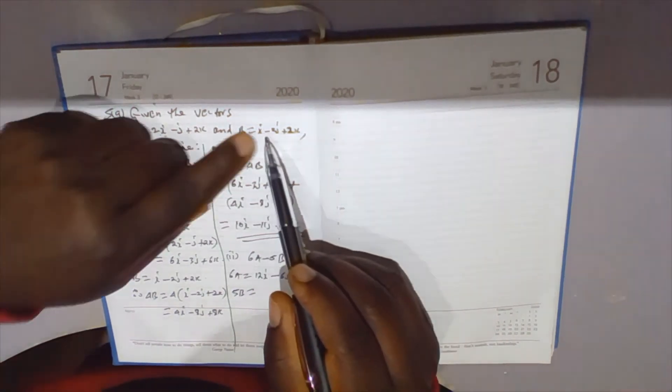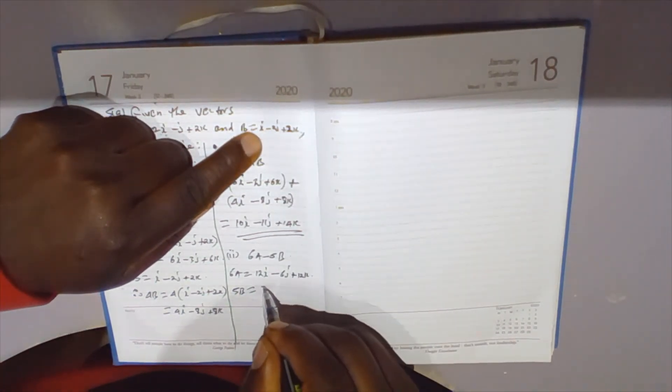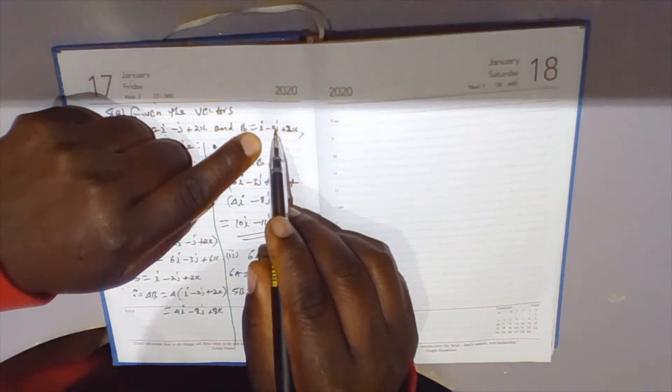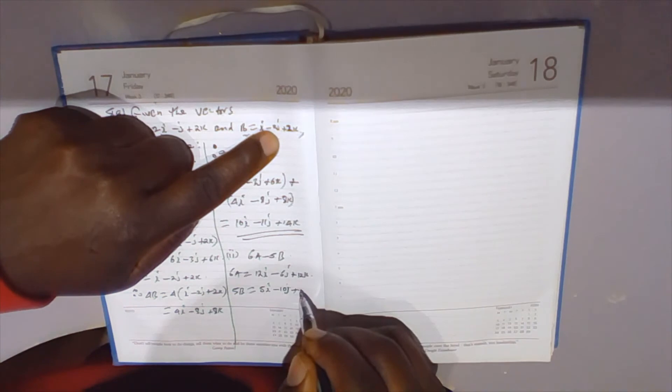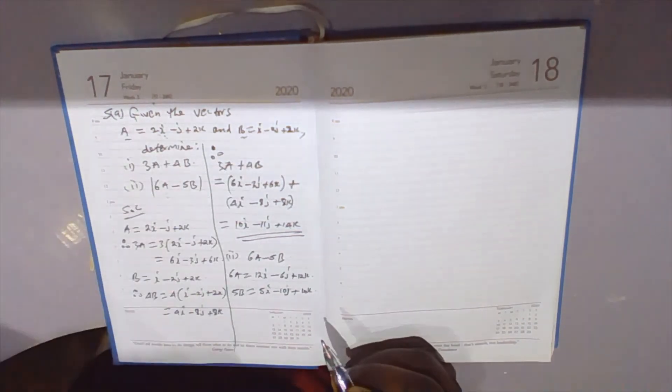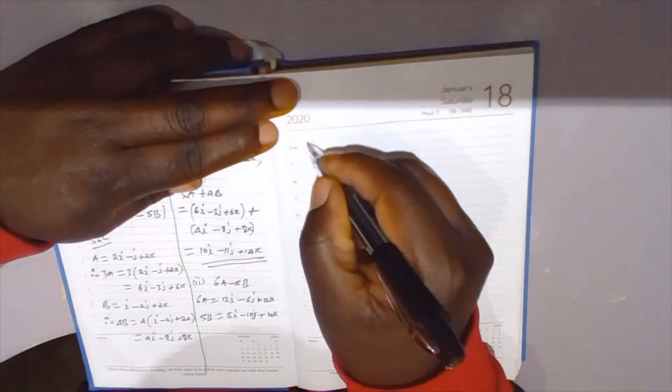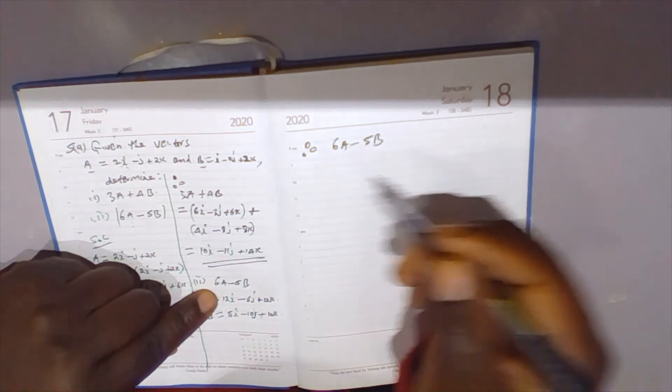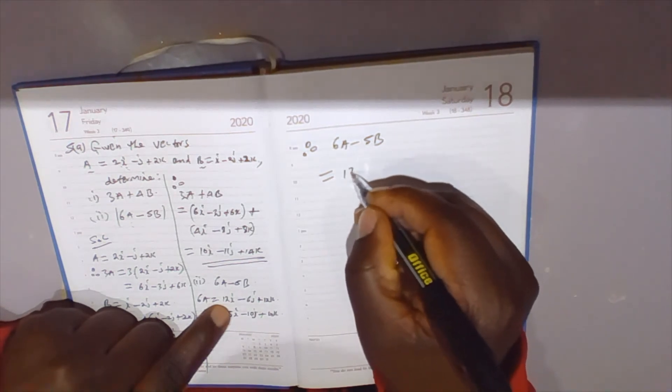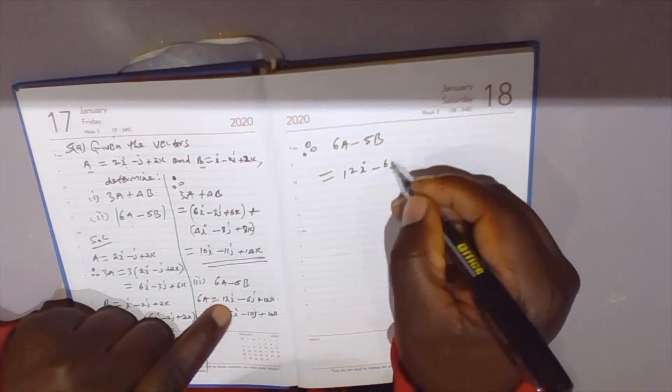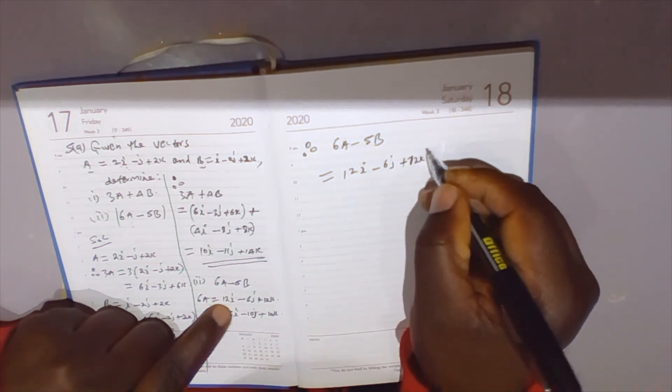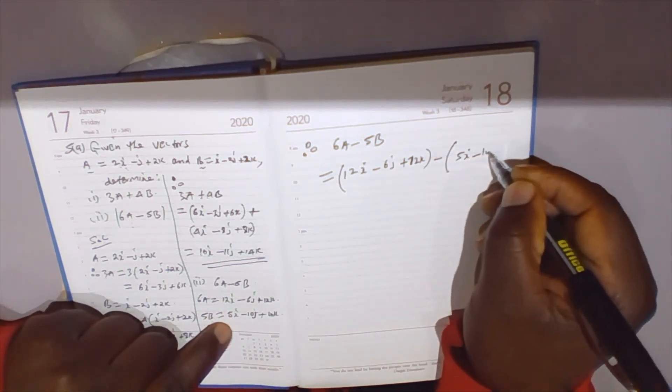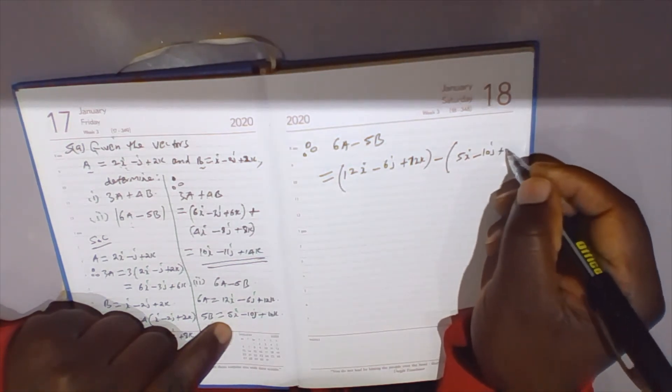Then 5b equals 5 times (i - 2j + 2k), which equals 5i minus 10j plus 10k. Therefore, 6a minus 5b equals (12i - 6j + 12k) minus (5i - 10j + 10k).